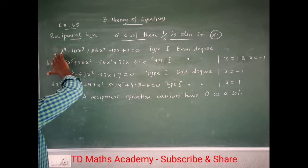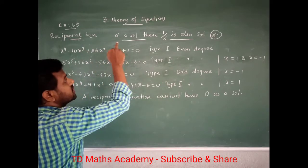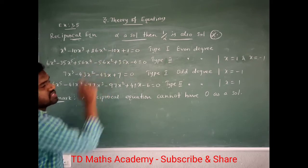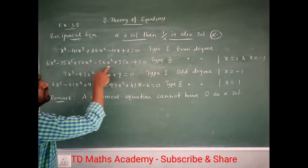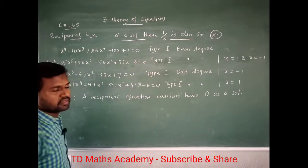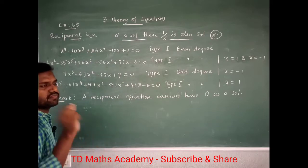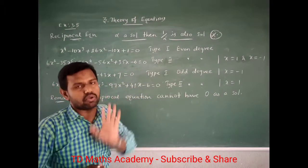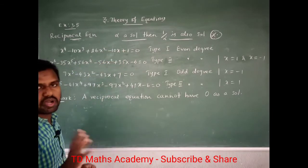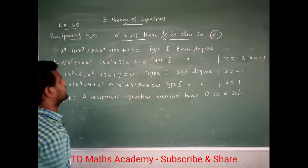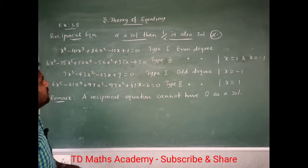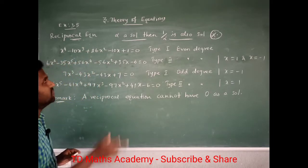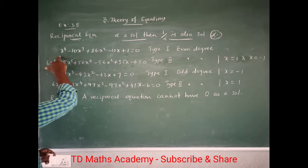The first coefficient equals the constant. So this is called a reciprocal equation — very simple. In the exam, you identify it: the first coefficient is equal to the last coefficient, and the middle term may be equal or may have sign change.